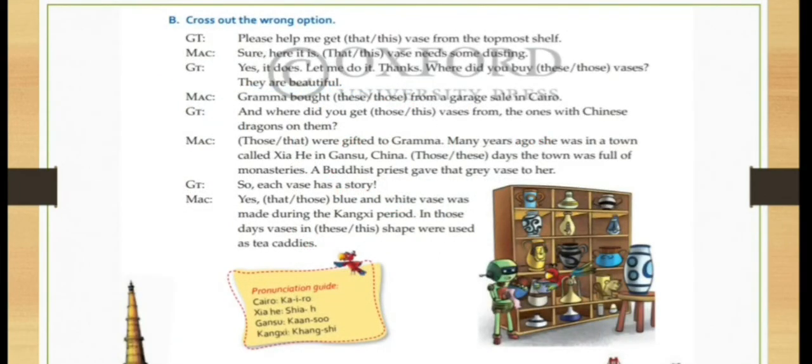Now, exercise B is given. Here, you have to cross out the wrong options. So whatever wrong is there, you will cross out and the correct one you will keep as it is. Please help me get dashwares from the topmost shelf. So here topmost shelf means it is far. So what we will use? You will use that. So you will cut off this. Make sure here it is. Dashwares needs some dusting. So again now the bag is near. So we will use these. They are beautiful.